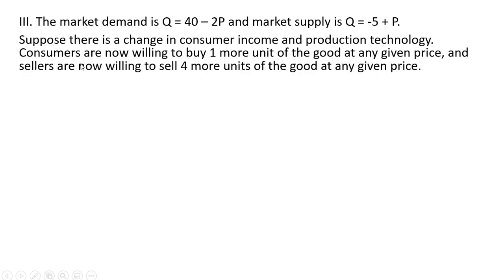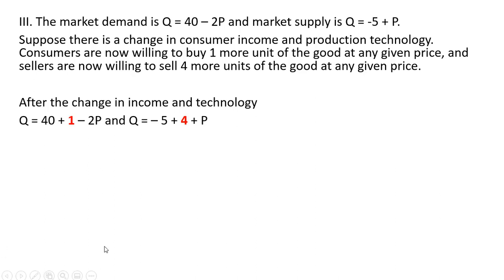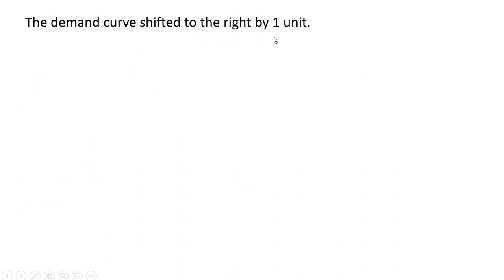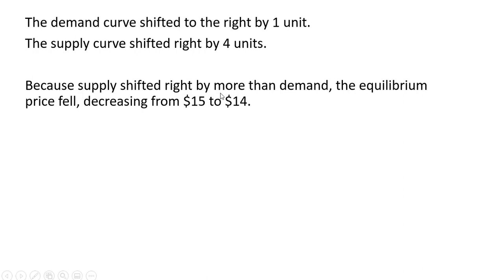In our last example, consumers are now willing to buy only one more unit of the good at any given price, and sellers are now willing to sell four more units at any given price — so here supply is shifting right more than demand. Incorporating those changes into our demand and supply equations and simplifying, the equilibrium price is $14. The demand curve shifted right by one unit, the supply curve shifted right by four units. Because supply shifted right more than the demand curve, the equilibrium price fell, decreasing from the original $15 to $14.